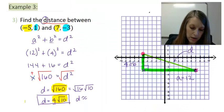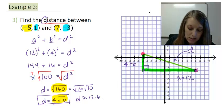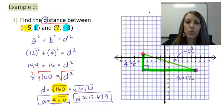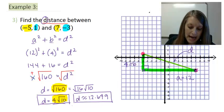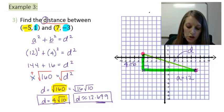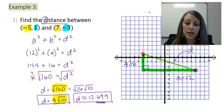So my approximate answer is 12.649. Make sure you read what the homework asks for, whether it wants an exact answer, an approximate answer, or both. And if it wants an approximate answer, make sure you round it to the appropriate number of decimal places. Here I've rounded it to three decimal places.